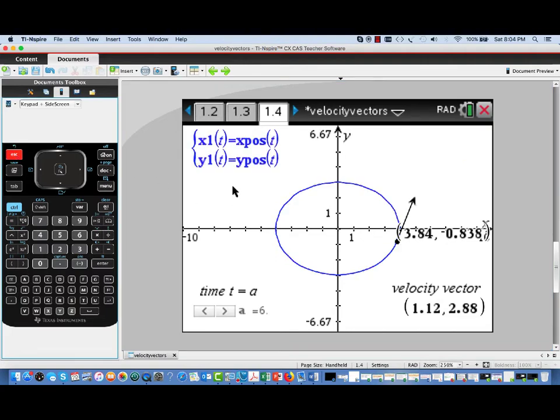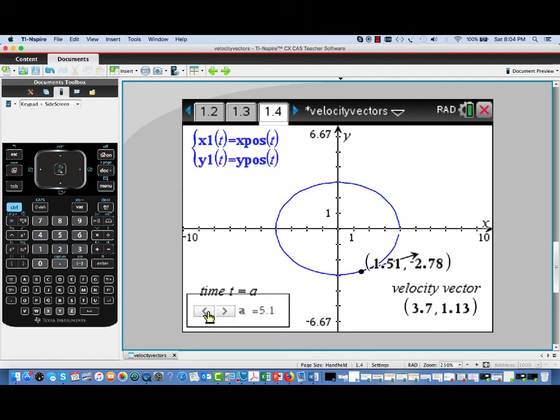This velocity vector tracer, if you will, is one we can still use on a plotted function, as long as we've entered the corresponding position functions for our X1 and Y1. You can see how this velocity vector document works.